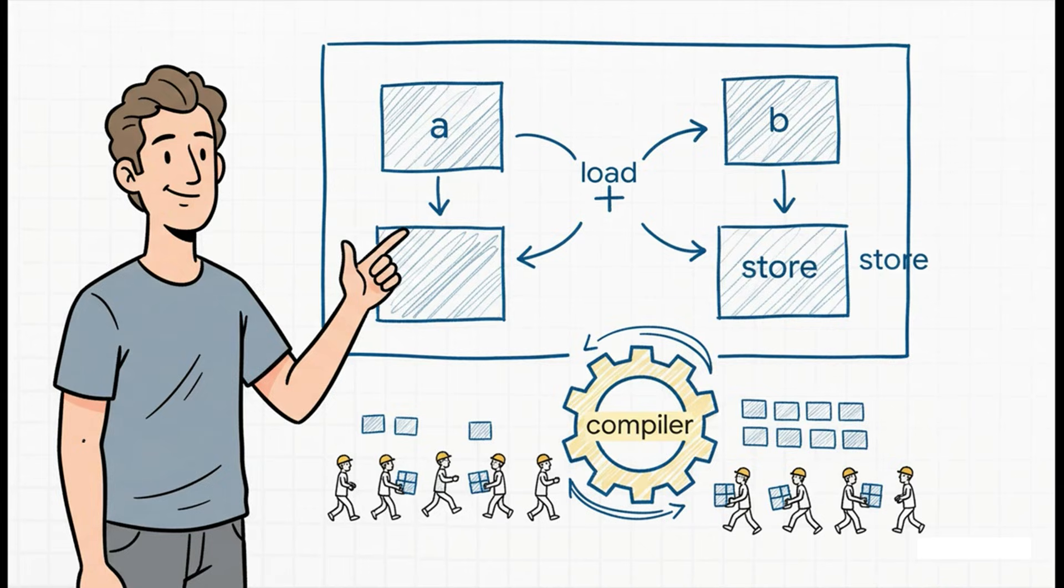Now, look at the new way with tile. Now, this example is in Python, which helps it look simpler. But focus on the real change here. There is no manual thread math. You just say load a tile from array A, load a tile from B, add them together and then store the result. You are describing what you want done with chunks of data, not micromanaging how every single thread should do its job.